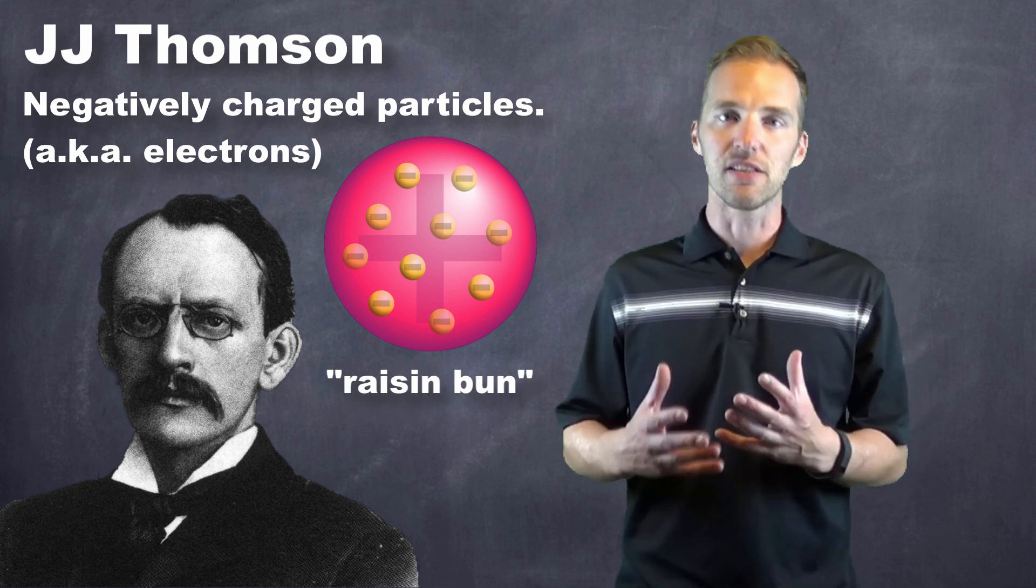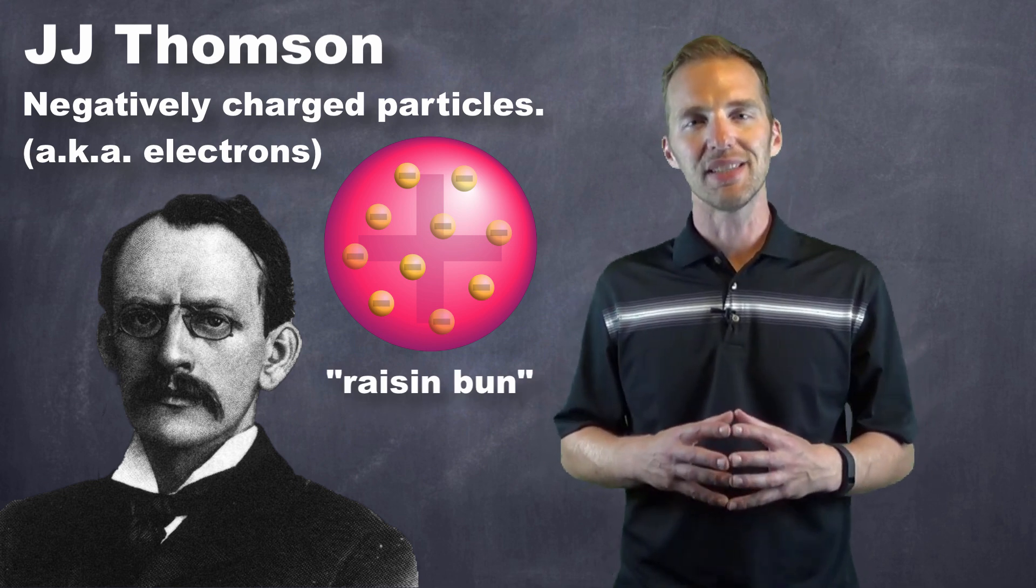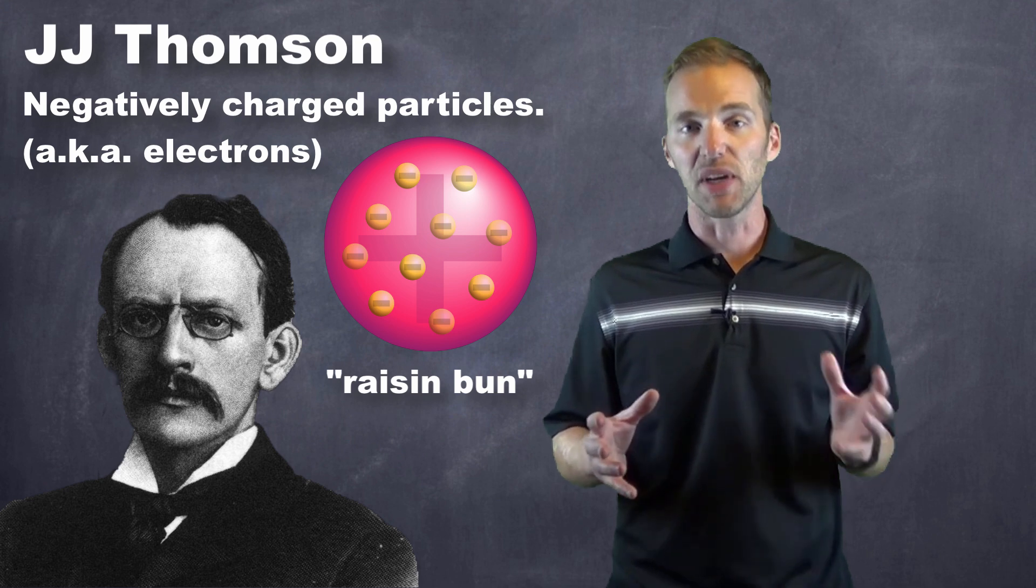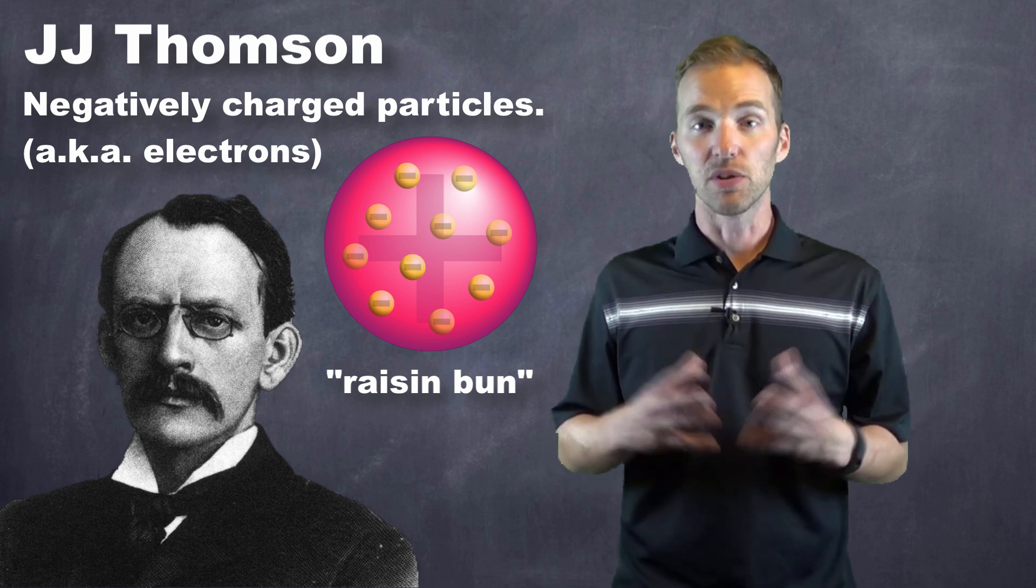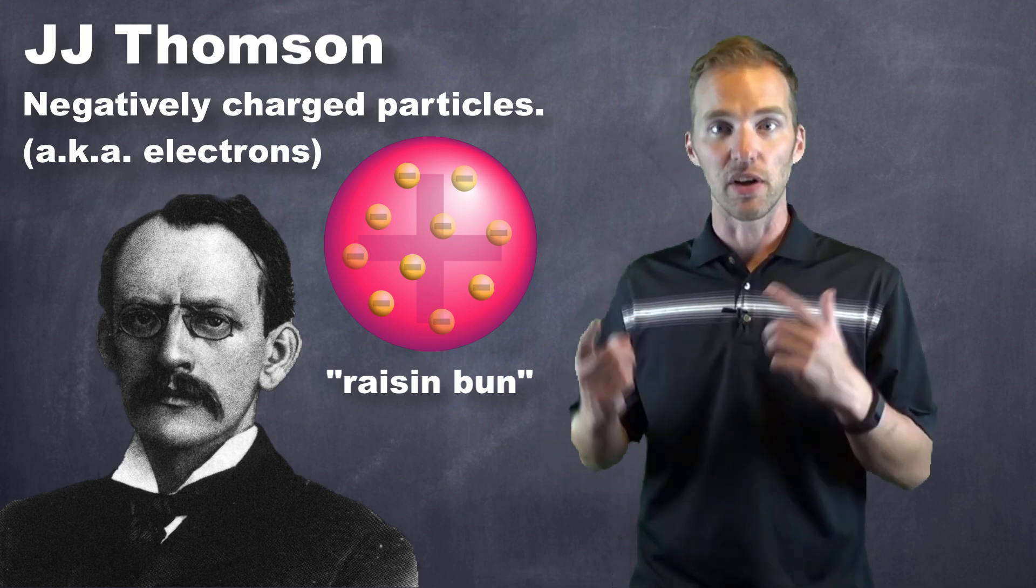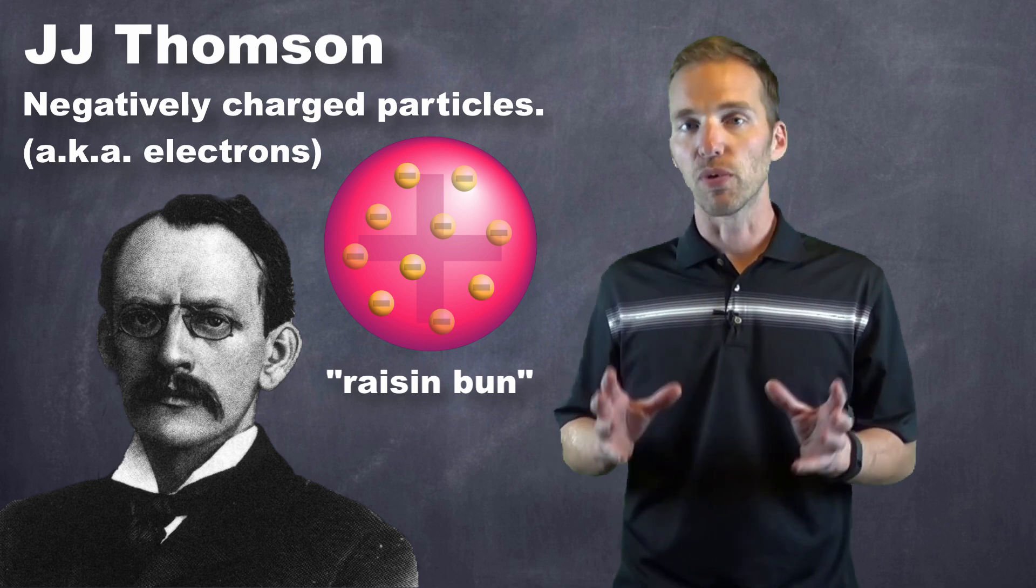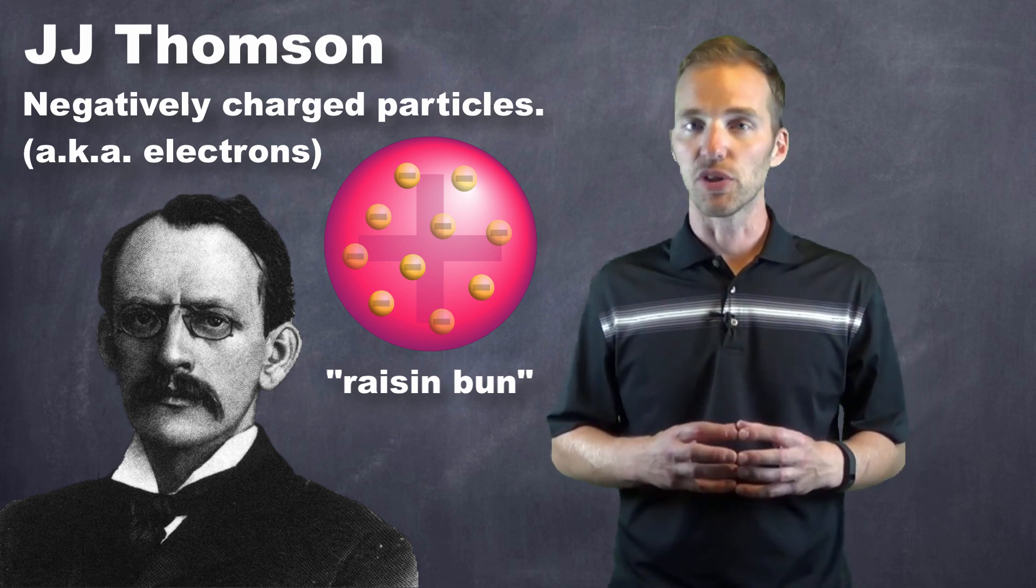And if we take a look at this depiction of the Raisin-Bun model, we can see that these negative charges appear to be fixed. Although, Thompson, to his own admission, thought that they started to spin around or move around this particular version of his atom.